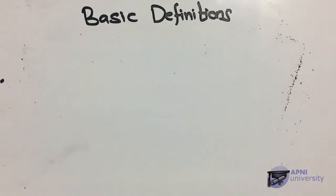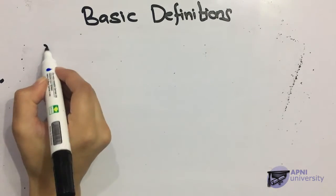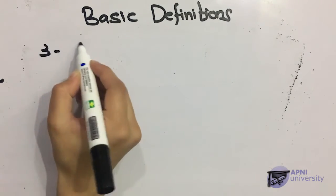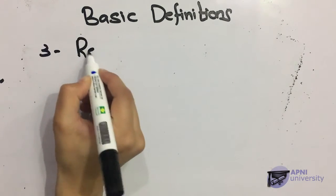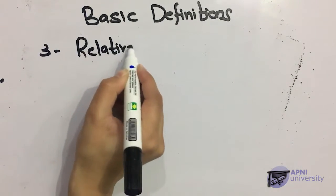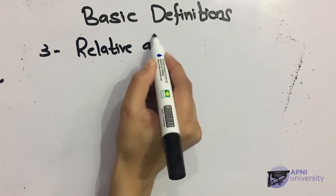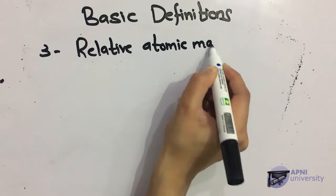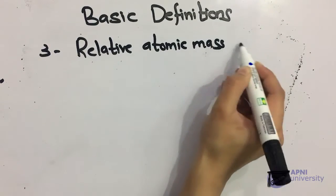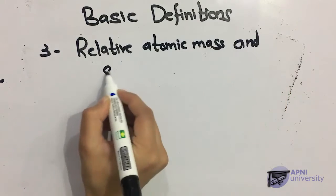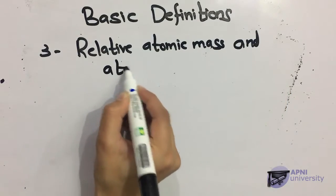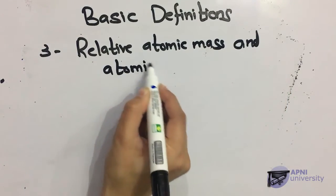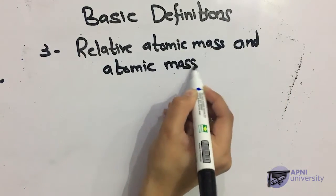Next, we have relative atomic mass and atomic mass unit. Relative atomic mass is the mass of an atom of an element relative to the mass of an atom of C12 — this is called its relative atomic mass.